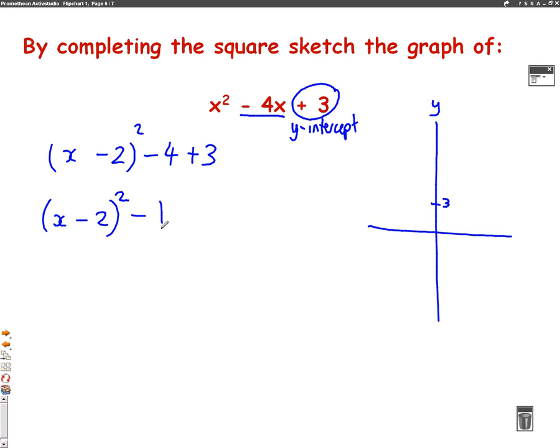So, we can use this to find the vertex. Which, as you remember, is the bottom point, or it could be the top point, of a graph. The y-coordinate of the vertex has an x and y-coordinate. The y-coordinate is just simply this minus 1. And the x-coordinate is how you make this bracket 0. Well, you can see that if x was 2, 2 take away 2 is 0. So, x is 2. So, the vertex, the minimum point of our graph, is at the points 2 across, minus 1 down. So, we know the vertex is there.